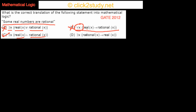Option D says: there exists X such that Rational(X) implies Real(X). This is the other way around — it's saying there exists an X where if X is rational then X is also real. That's not what we need to translate, so option C remains the correct choice.